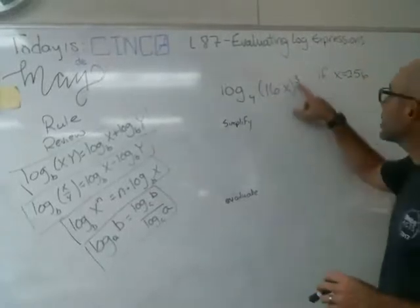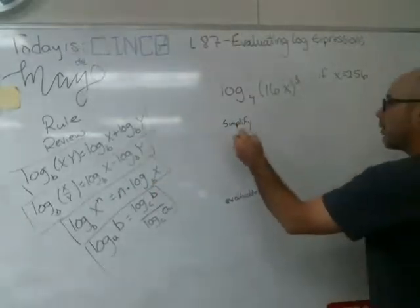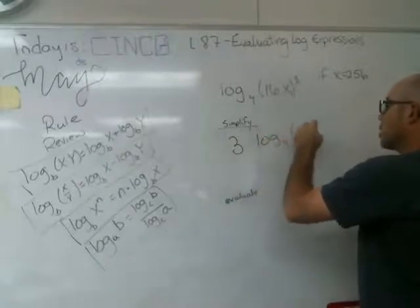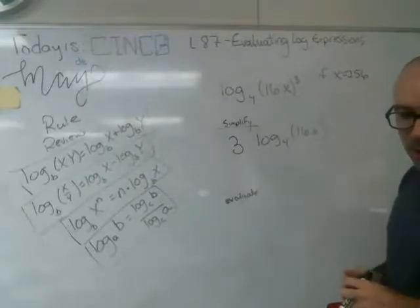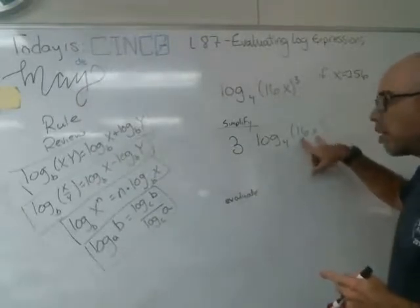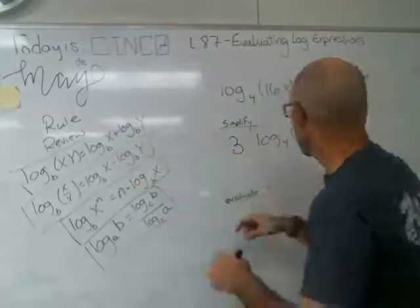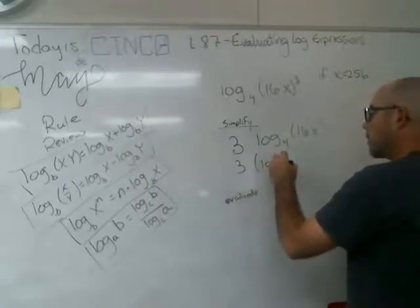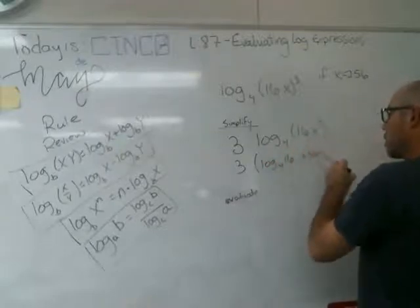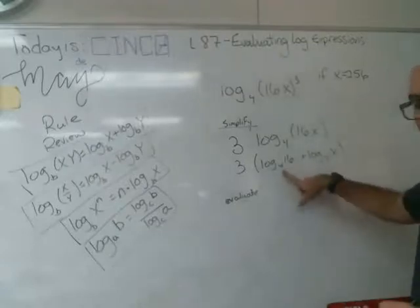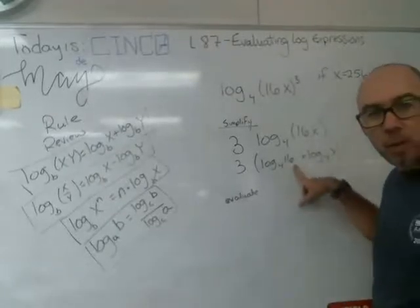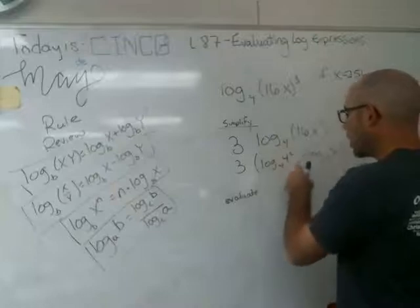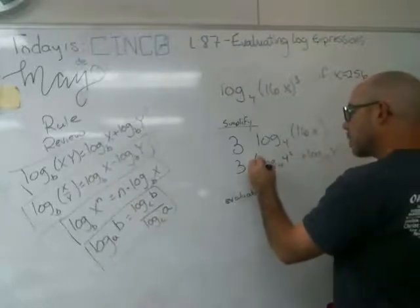First thing I see is this right here, that this is the power rule. So if I want to simplify, the first step that I'm going to do there is go 3 times log base 4 of 16x. Step 2 is that this right here is a product. So I'm going to use my product rule. I'm going to take these two factors and I'm going to break them up into two pieces. That is 3 times log base 4 of 16 plus log base 4 of x.